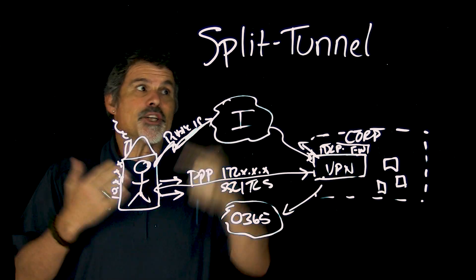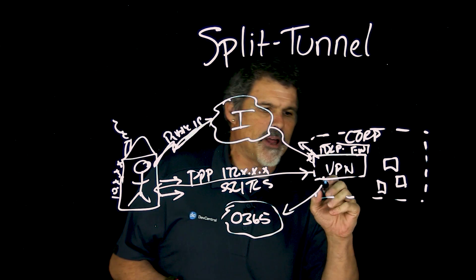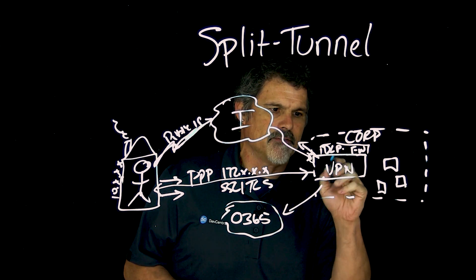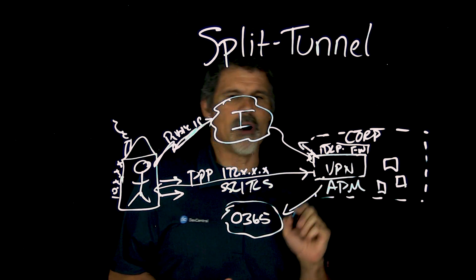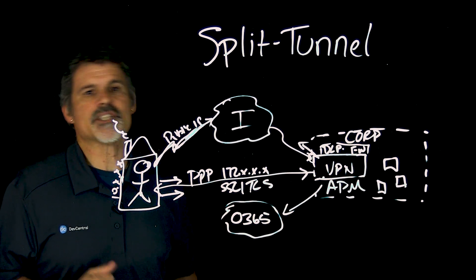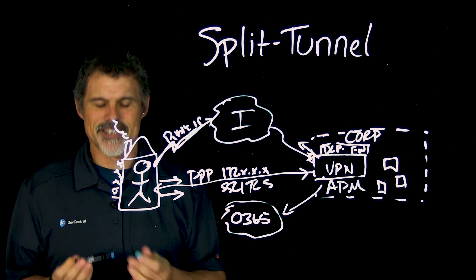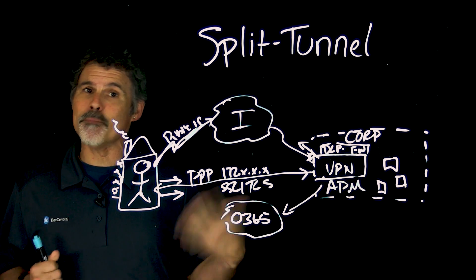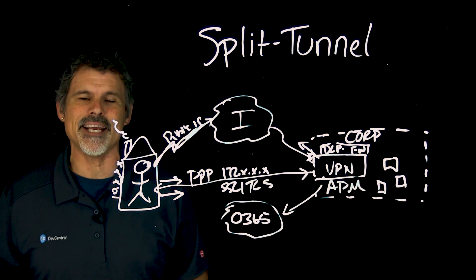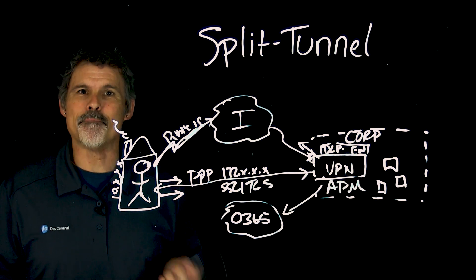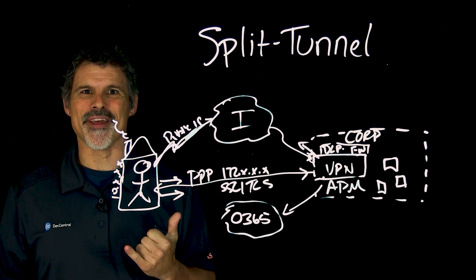If you'd like to learn more about split tunneling or Office 365, by the way, F5's VPN solution is Access Policy Manager — you can visit us at devcentral.f5.com. If you like this video, please hit the like button and subscribe if you haven't already. I'm Peter. Thanks for watching. We'll see you in the community.